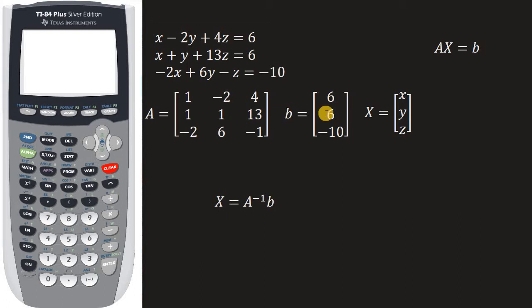And then b, this b right here, that's your constant matrix. That's the numbers on the right hand side of the equal sign, 6, 6, negative 10. That's this.